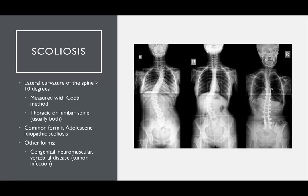Now let's cover scoliosis, focusing mostly on adolescent idiopathic scoliosis — the most common form. Scoliosis is a lateral curvature of the spine greater than 10 degrees, though it's not a pure lateral curvature — there's a sagittal component as well. These angles are measured with the Cobb method. It's usually a combination of thoracic and lumbar curves. Other forms include congenital and neuromuscular scoliosis.